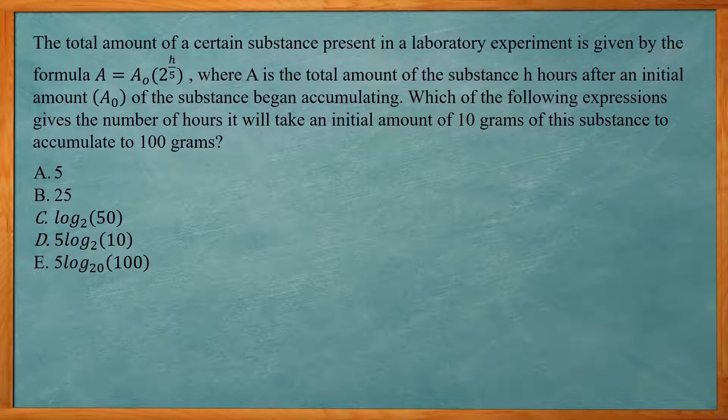So this is exponential growth. We want to figure out what h is when the initial amount is 10 and the final amount is 100. So if we fill in those numbers, we have 100 is equal to 10 times 2 raised to the h over 5 power.